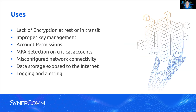Some basic use cases include lack of encryption at rest or in transit. Typical configurations of some serverless environments will have HTTP turned on by default even though they're not really communicating on that port — it's still turned on and could potentially be an attack vector. Improper key management is another big one: API secrets and authentication keys. Not only do you have key management systems in AWS, but you can also do auto-rotation of those keys, so if one gets out you can pull it or rotate it automatically.